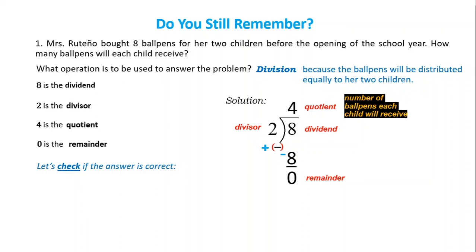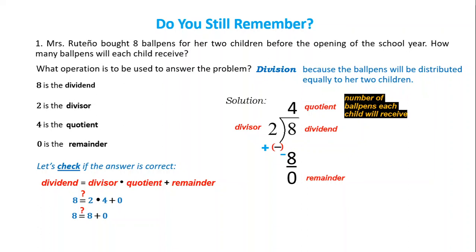Let's check. To check the answer in division, multiply the divisor by the quotient and add the non-zero remainder. Substituting the values: dividend is eight; divisor two times quotient four, plus remainder zero. Order of operation: two times four equals eight, then add zero — still eight. The answer is correct if both sides of the equation are equal.